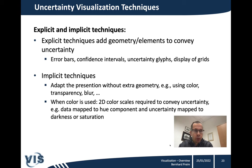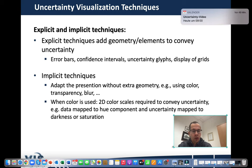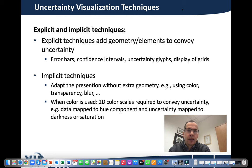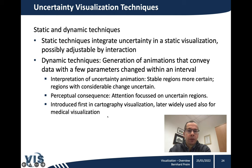As a short recap, I came up at the end of the last video lecture with a taxonomy that explains different sources of uncertainty: namely attribute or value uncertainty, positional uncertainty, directional uncertainty, and temporal uncertainty — meaning we are not completely sure when something started or ended. These different situations give rise to different visualization techniques. We further said that there are explicit techniques, where some uncertainty-related geometry needs to be integrated, or, in contrast, implicit techniques where no extra geometry is needed. We also briefly noted that there may be static and dynamic techniques.